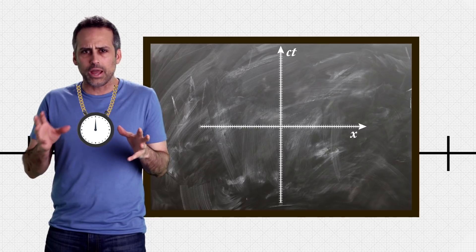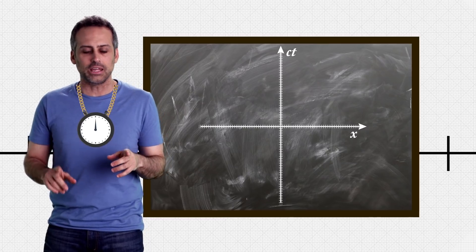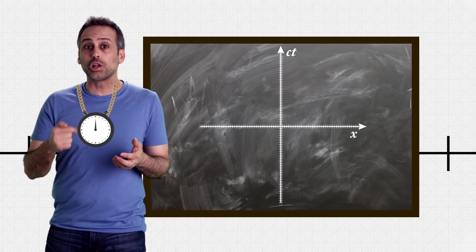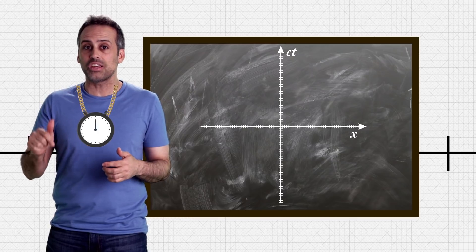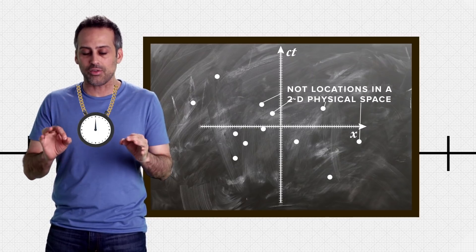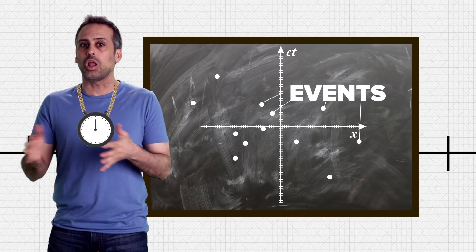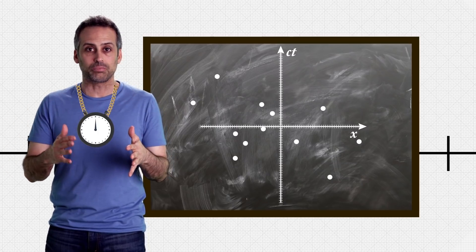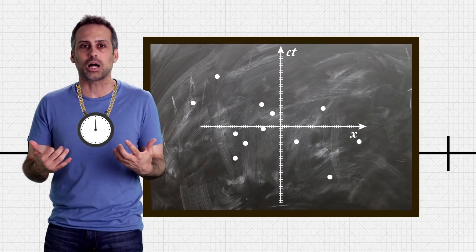I know that seems like an awkward way to record time, but you'll see in a minute why it's convenient. Now, recall from our earlier flat spacetime episode that points on this blackboard are not locations in a two-dimensional physical space. Rather, they are events, each of which occurs somewhere along my axis in a one-dimensional physical space and at some moment according to my clock.